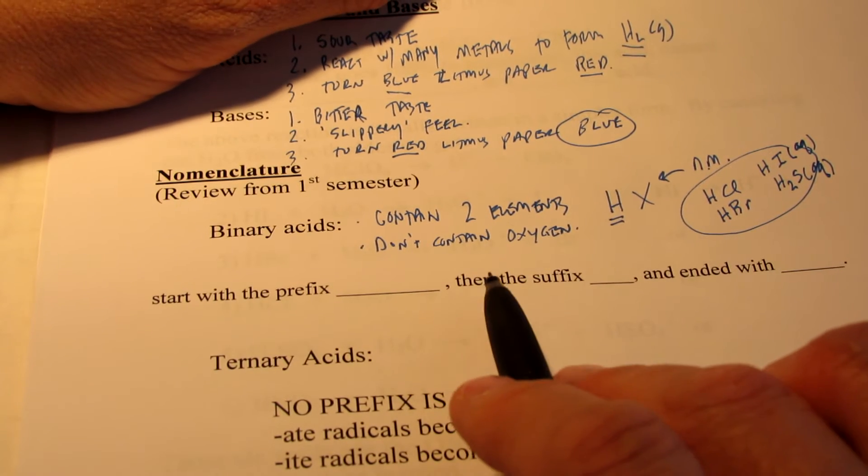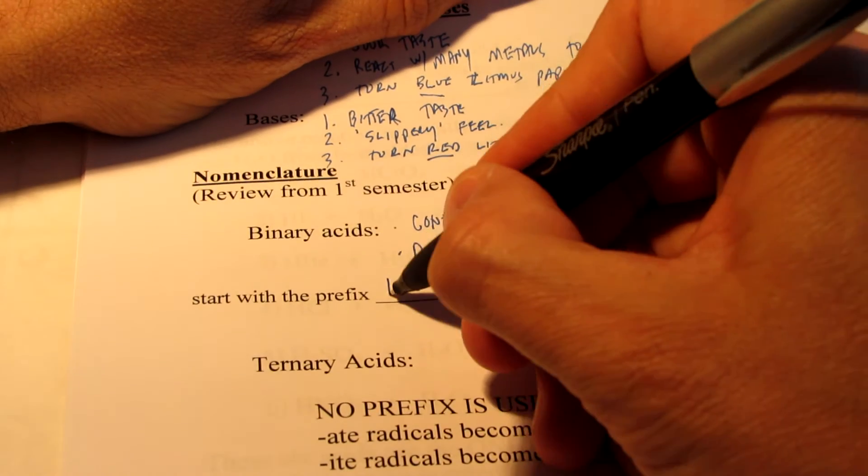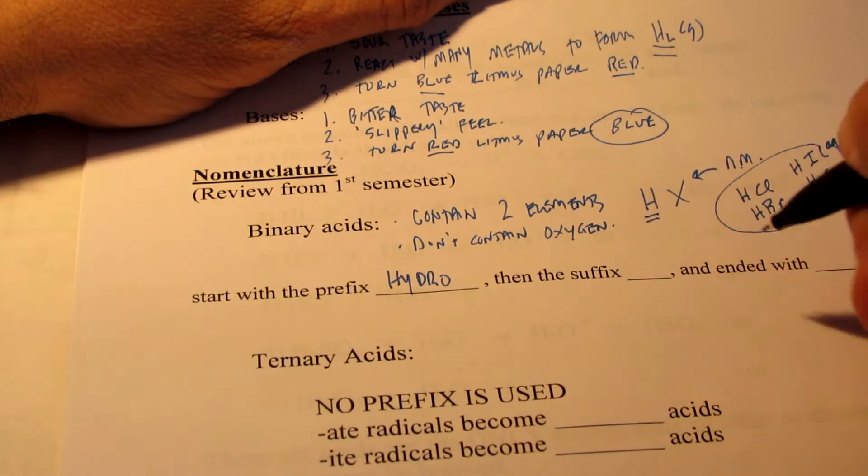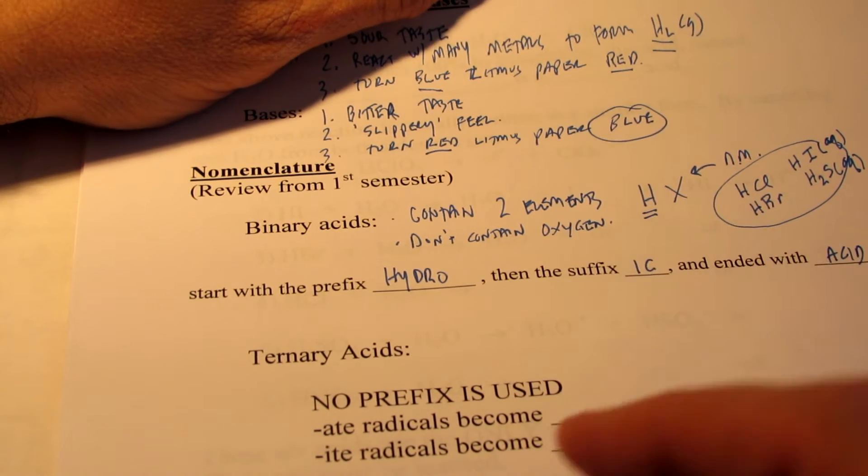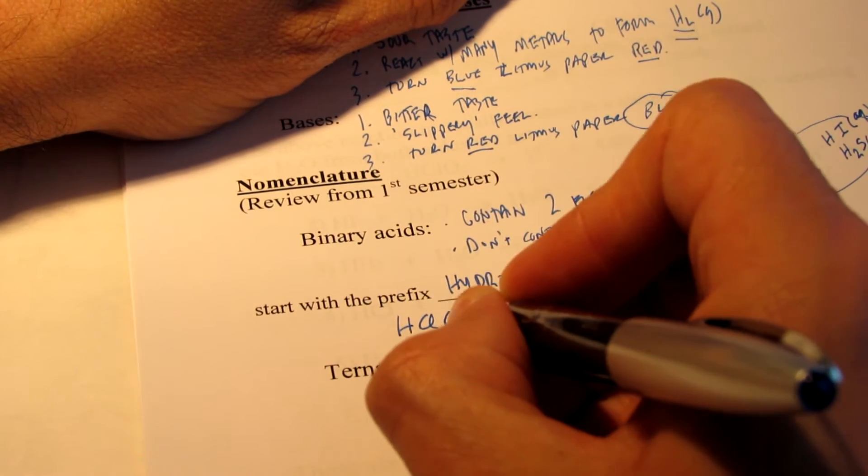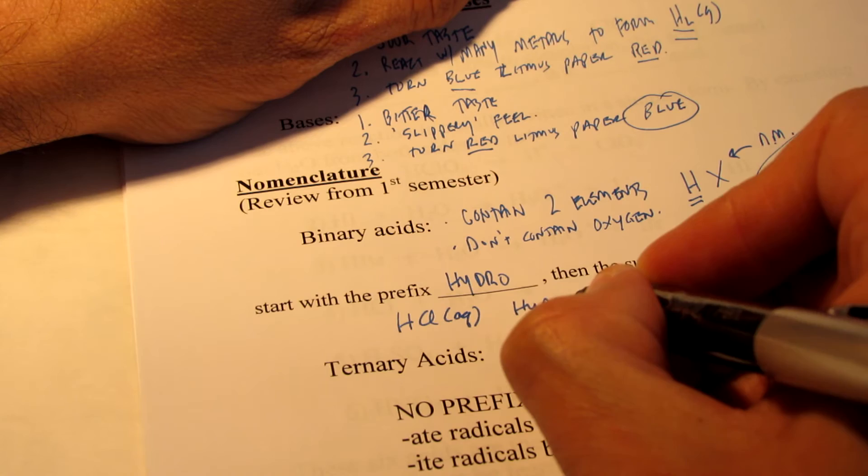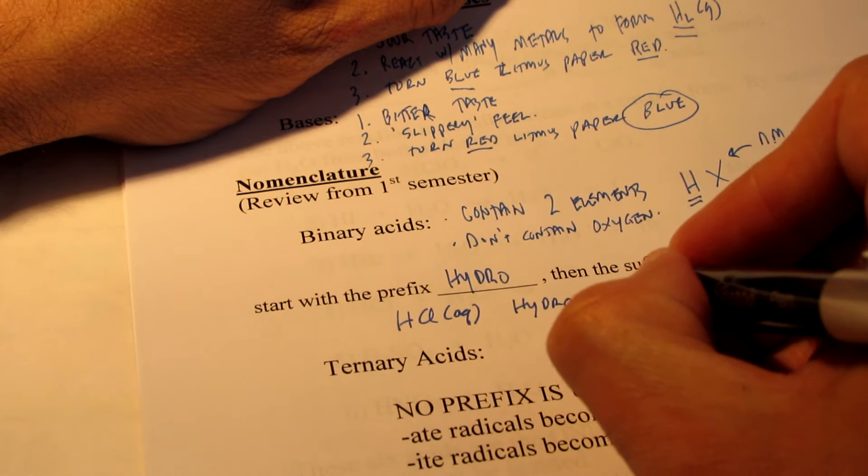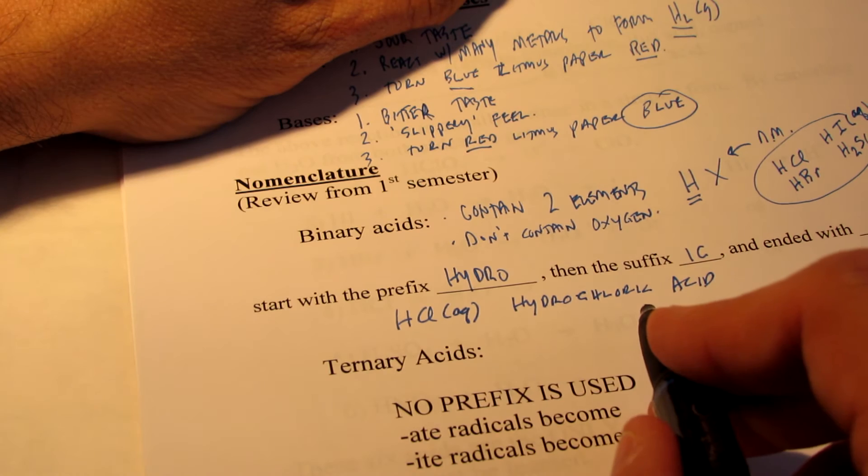Now to name them, as you recall from much earlier in the year, we learned how to name acids. Binary acids all begin with the prefix hydro and they all end with the suffix -ic, and then we say acid. Let me give you an example. We'll go ahead and do HCl really quick. HCl, we'll put an AQ here, it's dissolved in water. We'll start with hydro. And then the suffix will be referring to the non-metal, and we will do chlor-ic, and then we would say acid. So HCl is hydrochloric acid.